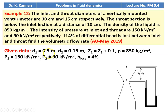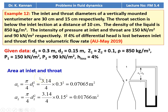D1 equals 0.3 meter (inlet), D2 equals 0.15 meter (throat), and Z1 equals Z2 plus 0.1 since the throat is below the inlet. Density is 850 kg/m³, P1 equals 150 kg/m², P2 equals 90 kg/m², and head loss equals 4 percent. Area A1 = π/4 × 0.3² = 0.07065 m². Area A2 = π/4 × 0.15² = 0.01766 m².